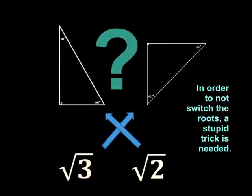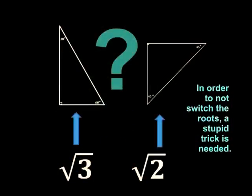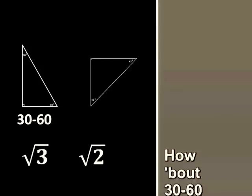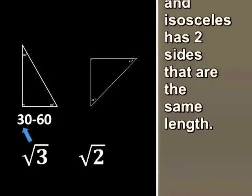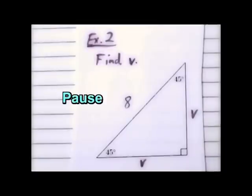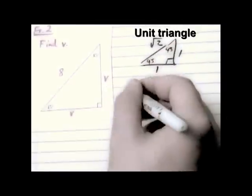In order to not switch your roots, a stupid trick is needed. How about thirty-sixty has a three, and isosceles has two sides that are the same length to make your roots.